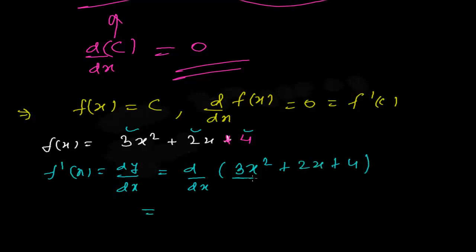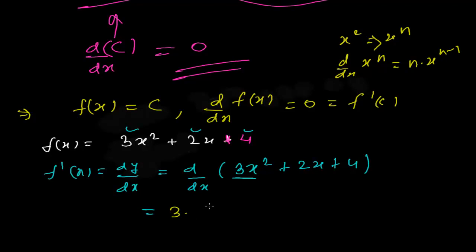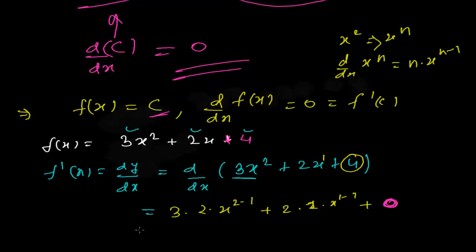So dy/dx of 3x² + 2x + 4: for 3x², it's like x to the power n, and the derivative of xⁿ is n·x^(n−1), so it becomes 3 times 2 times x^(2−1). For 2x, n is 1, so it becomes 2 times 1 times x^(1−1). And for the constant 4, the derivative is zero.